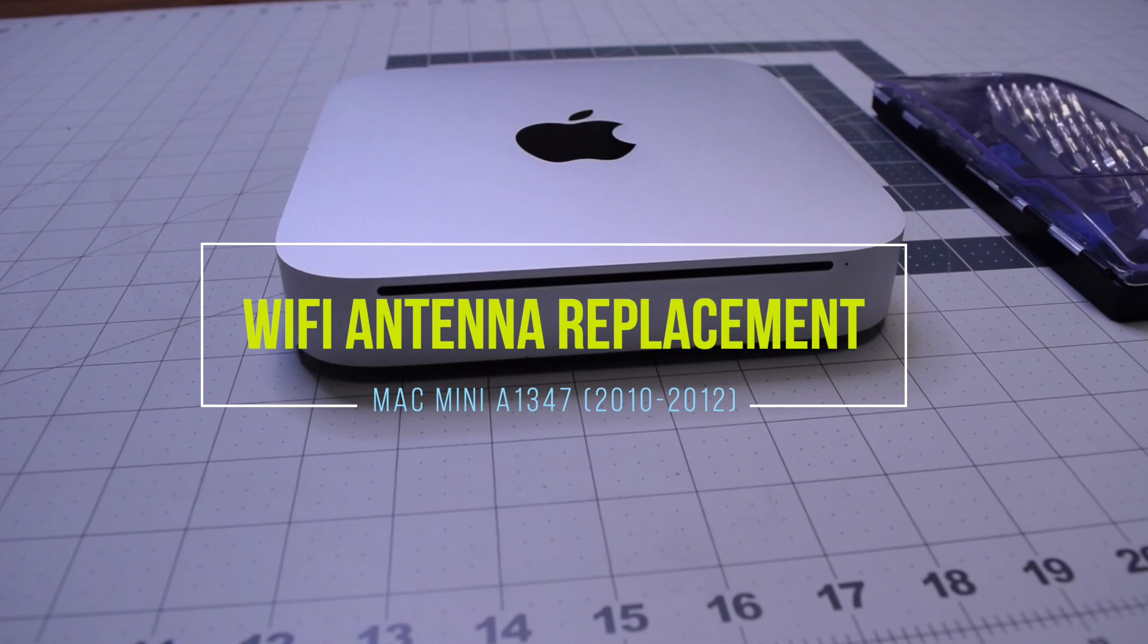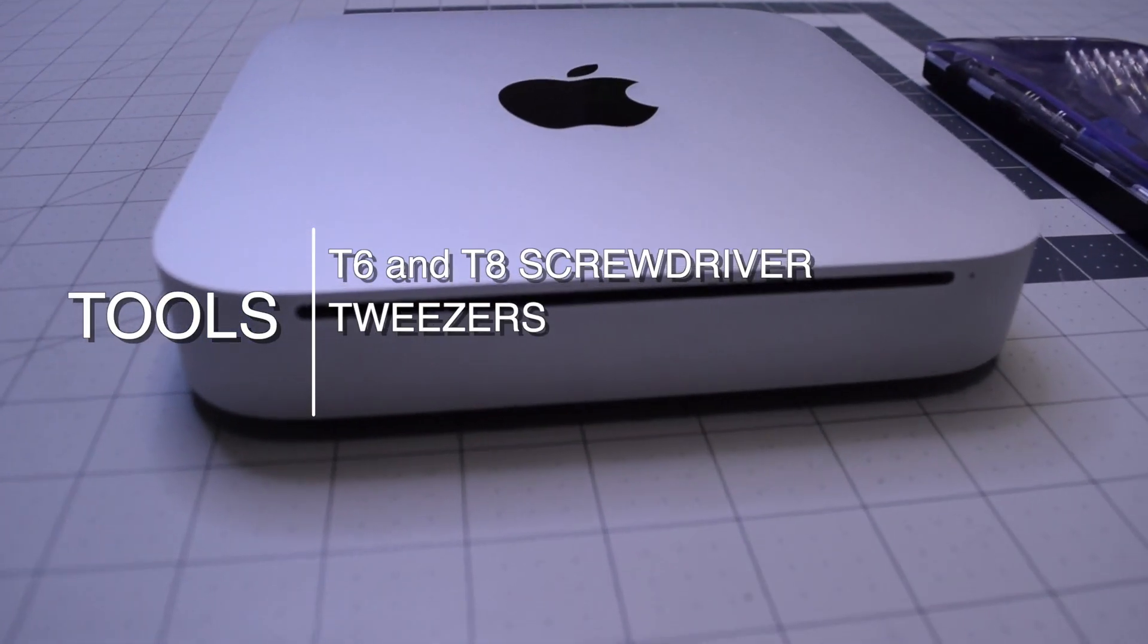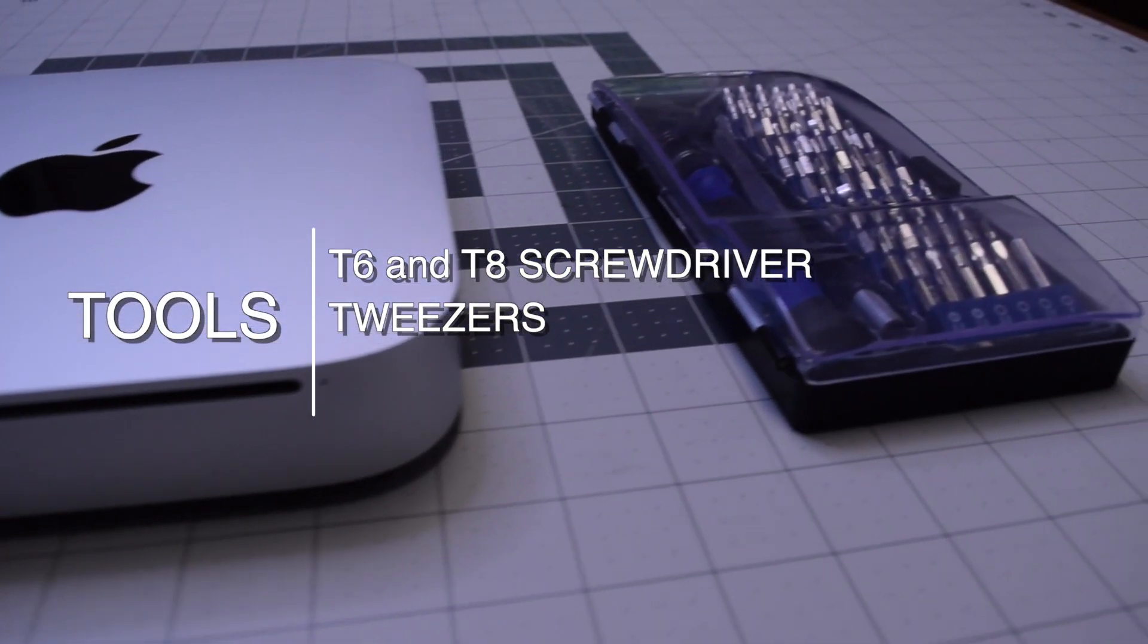Wi-Fi antenna replacement Mac Mini A1347 2010 through 2012. The tools we'll need are T6, T8 screwdriver and tweezers.